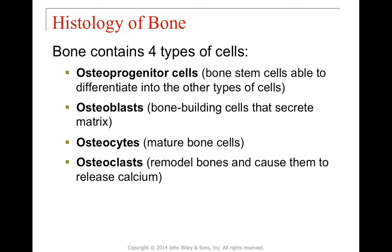We have four major types of bone cells. First, osteoprogenitor cells — as the word progenitor suggests, these are stem cells. Osteo means bone, so osteoprogenitor cells are bone stem cells. They are undifferentiated and can differentiate into the three other types of cells, including the osteoblast lineage. Osteoblasts are bone-building cells that secrete the extracellular matrix — remember, B is for building. So osteoblasts build bone by secreting the matrix.